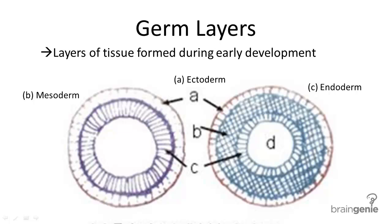Germ layers are different layers of tissue that form within an organism during its early development. The main three layers you should know about in biology are the ectoderm, the endoderm, and the mesoderm. Let's go through each.